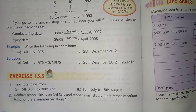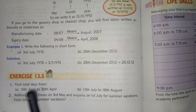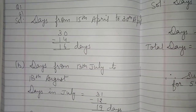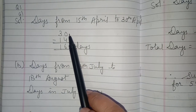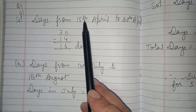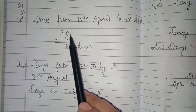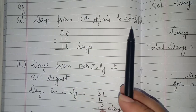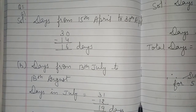Hello everyone, today we will revise Exercise 13.5. Question number one: find total days from 15th April to 30th April. How many total days are there in the month of April? 30. We need to find days from 15th April, so we subtract the days before it — 14 days before 15th April. So 30 minus 14 gives us the days from 15th April to 30th April.